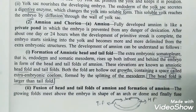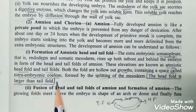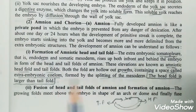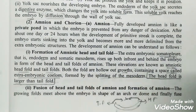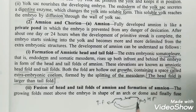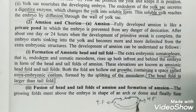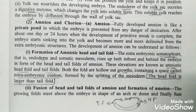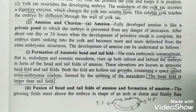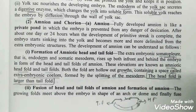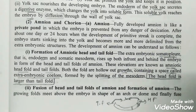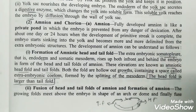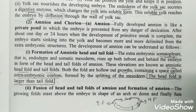We also talked about the extra-embryonic coelom. When these folds are made, there is a hollow space forming a tube-like structure. This empty space is called the coelom.